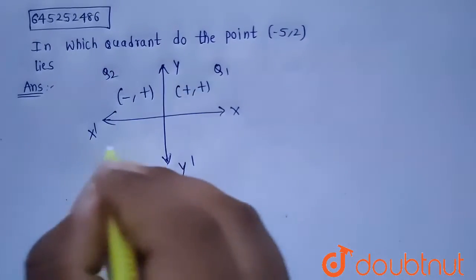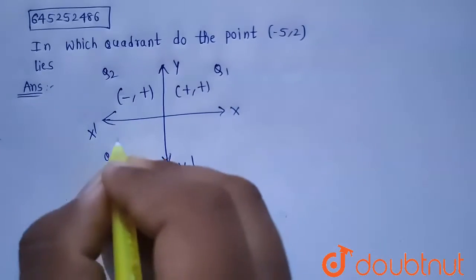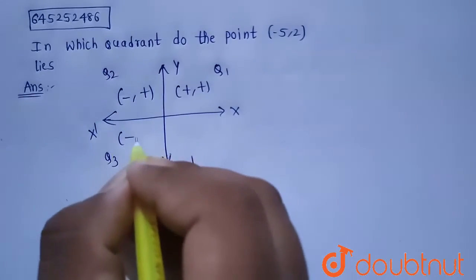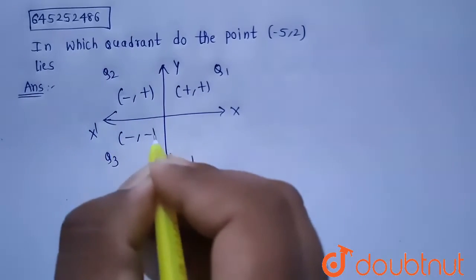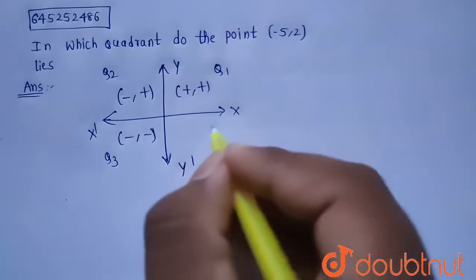And this is Quadrant 3. In this case, both the x-axis and y-axis are negative. So both the x-coordinate and y-coordinate will be negative.